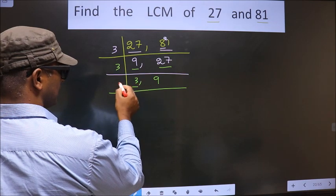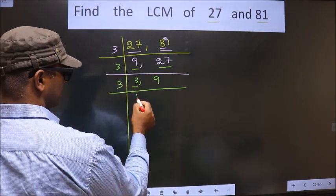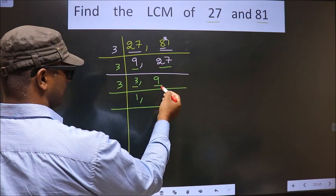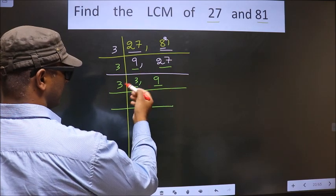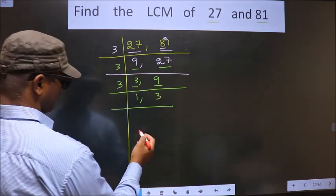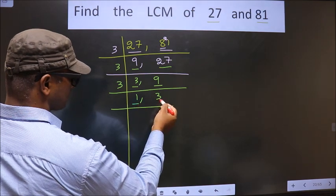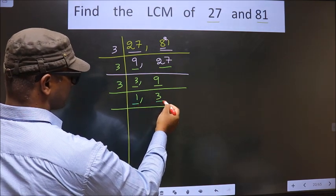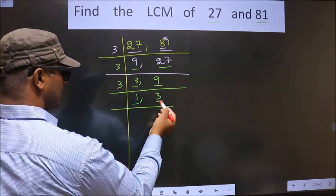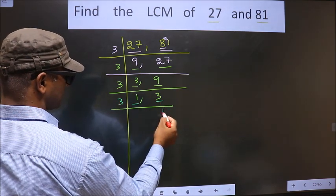Now here we have 3 — that is a prime number, so we take 3 ones is 3. The other number is 9; when do we get 9 in the 3 table? 3 threes is 9. Now here we got 1, so we focus on to the next number that is 3. 3 is a prime number, so we take 3 ones is 3.